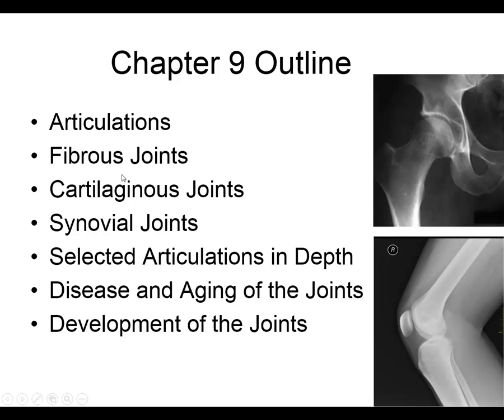Another way to classify joints is by mobility: whether it's immobile — like your teeth or the sutures in your skull — or moves slightly, like the symphysis pubis, or moves widely, like the synovial joints such as your shoulder and your elbow.